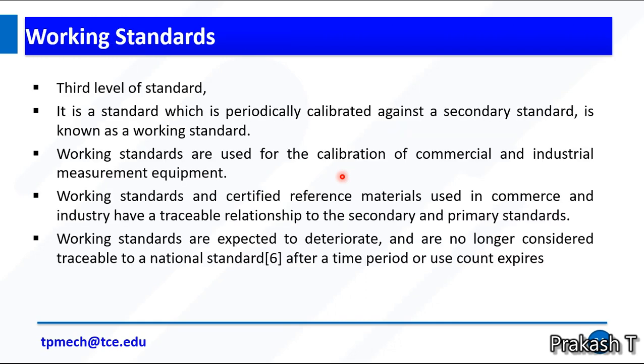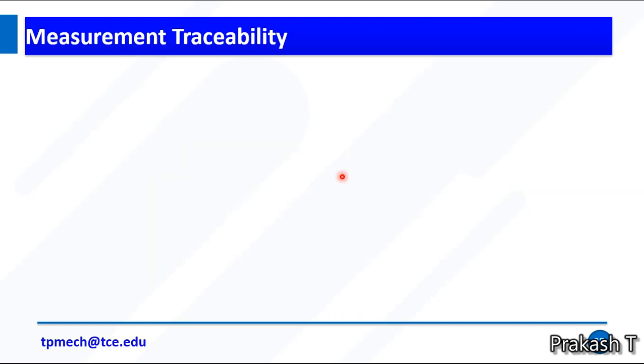Working standards are also expected to deteriorate and are no longer considered traceable to a national standard after a time period of use. We have three standards: primary, secondary, and working. Working standards are calibrated with secondary standards. Secondary standards are calibrated with primary standards. This is known as traceability.